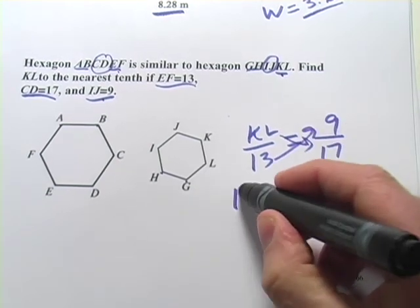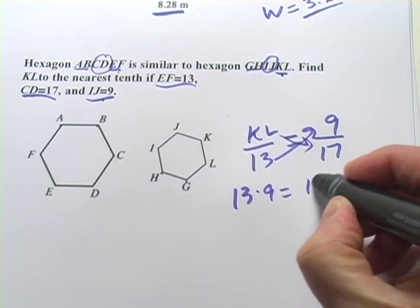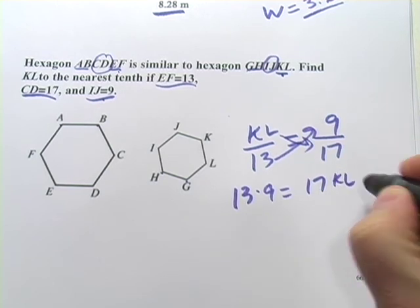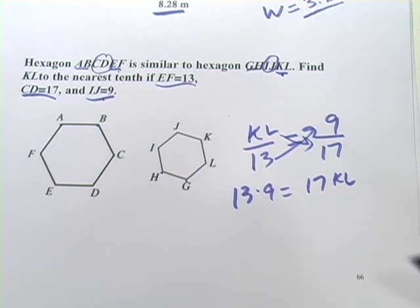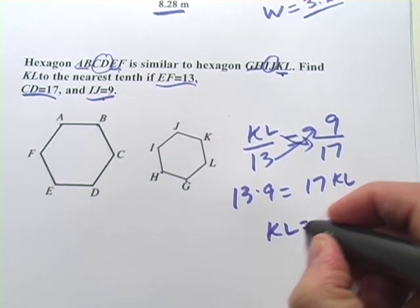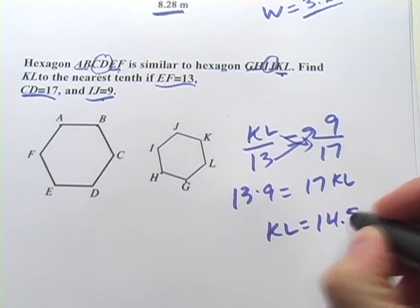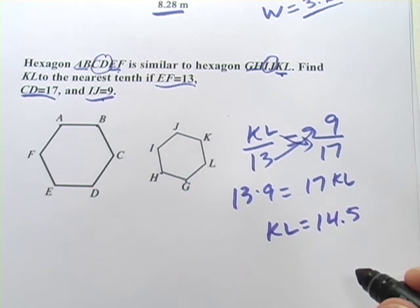We've got 13 times 9 equals 17 times KL, which is what we're looking for. And when you crunch the numbers on that, you should get KL equals 14.5. So that's how you work with similar polygons.